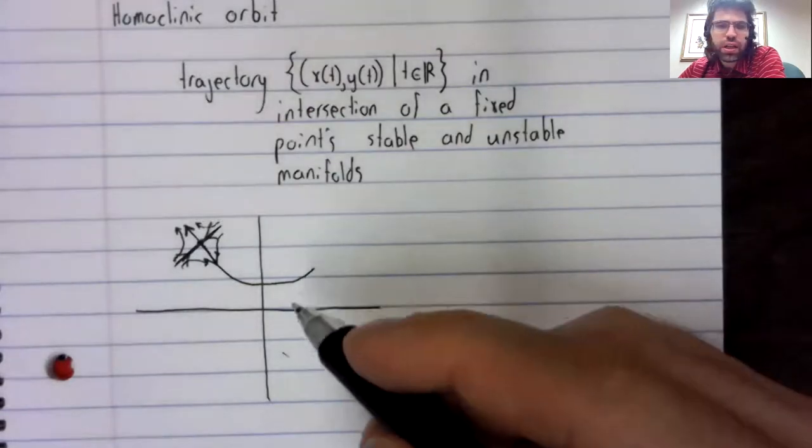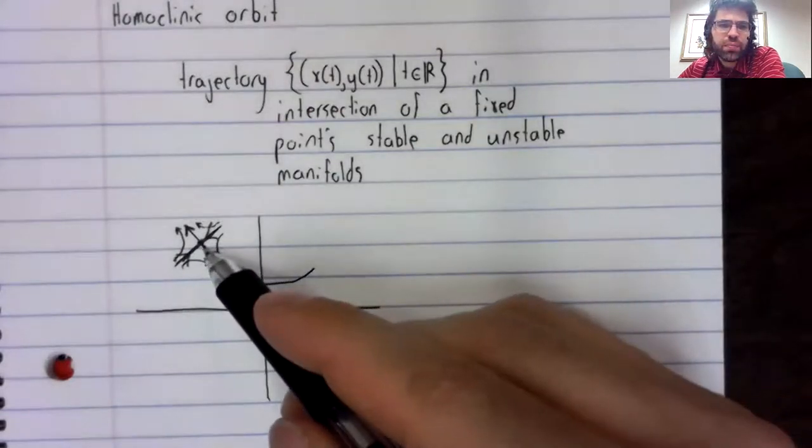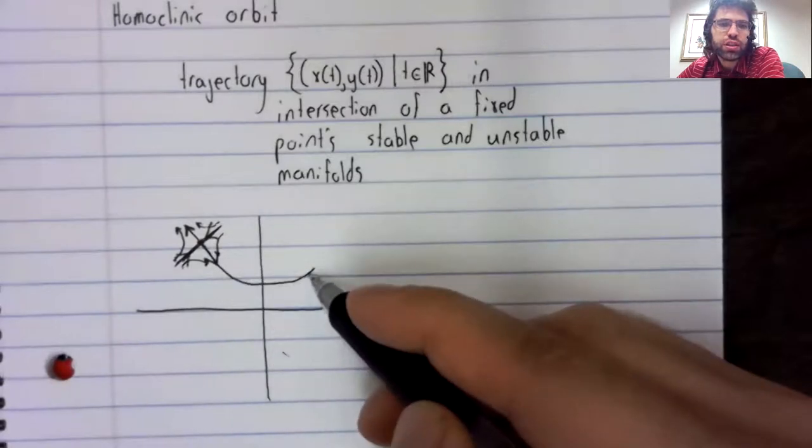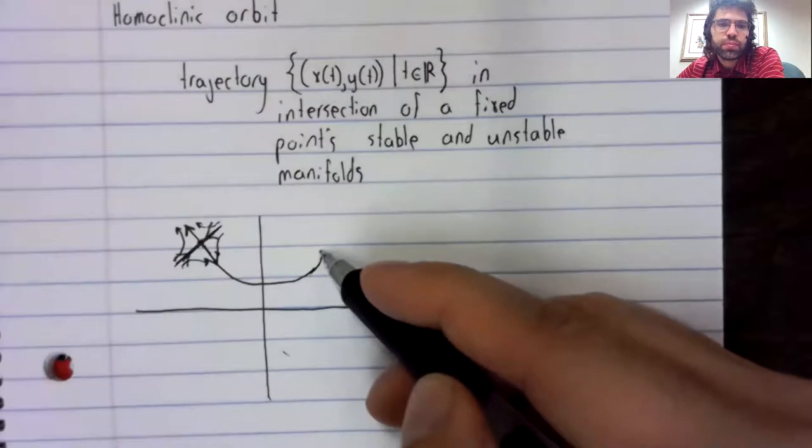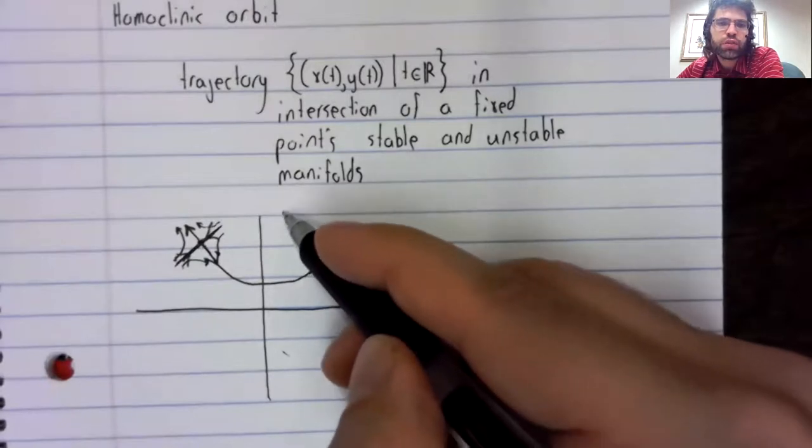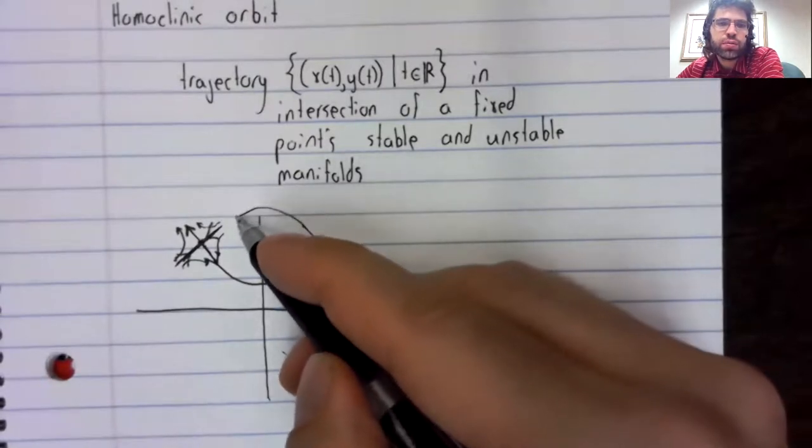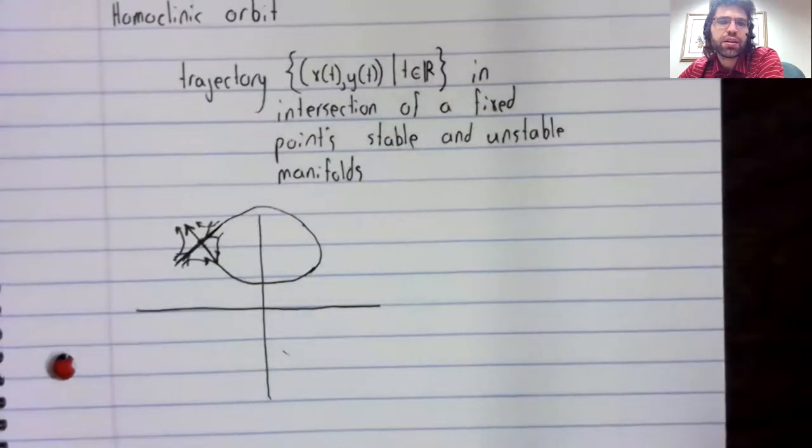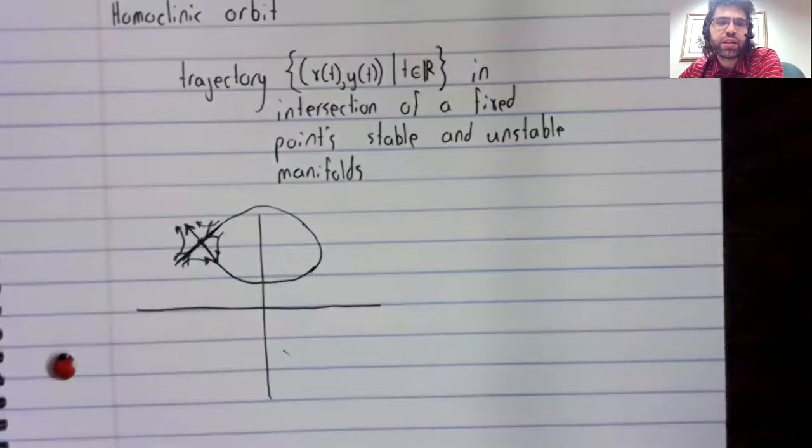And one thing that could happen is that if we go along this trajectory, we curve around and go back to the fixed point.